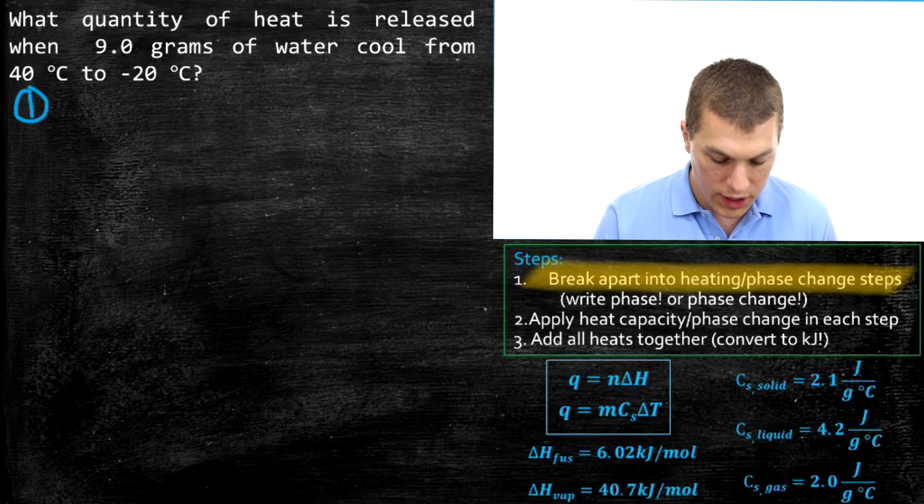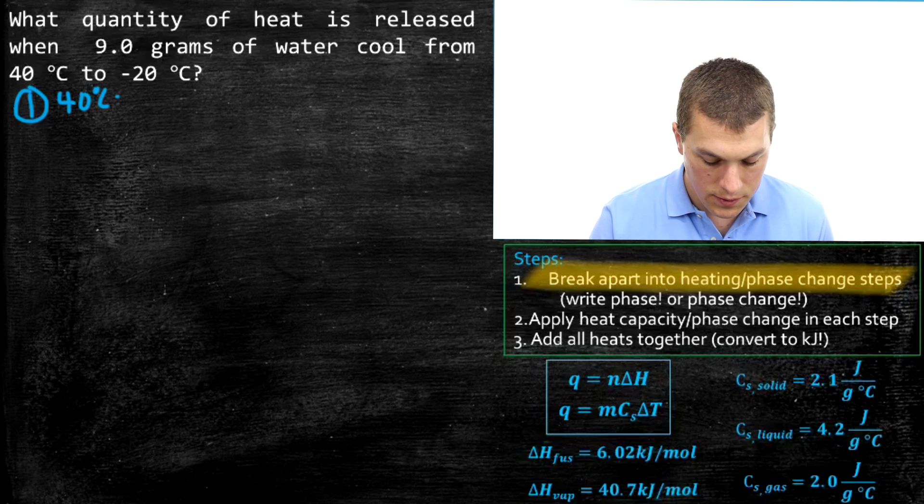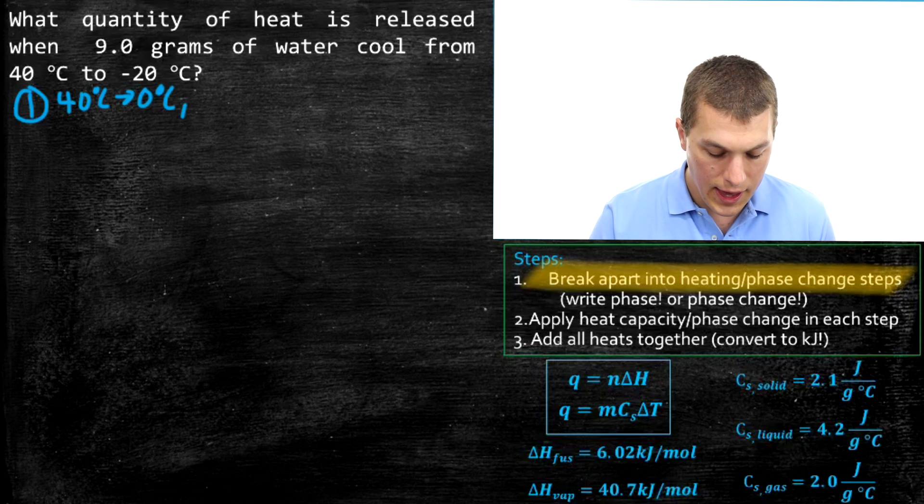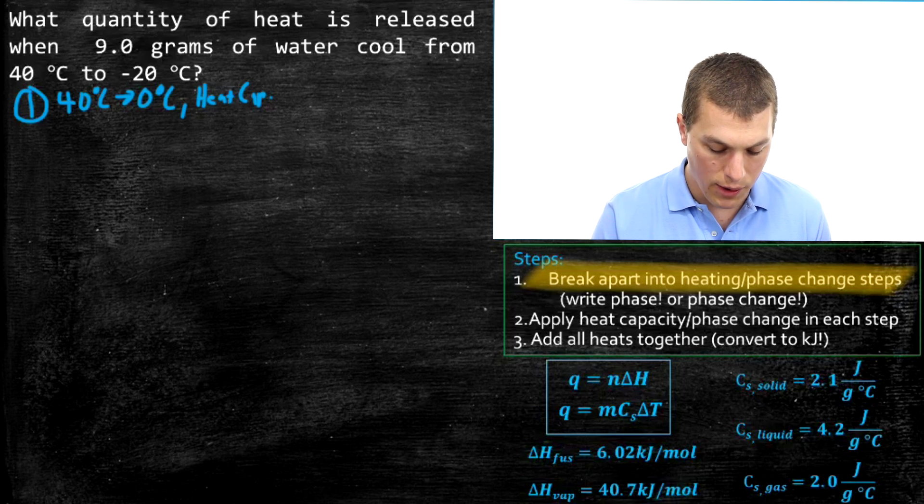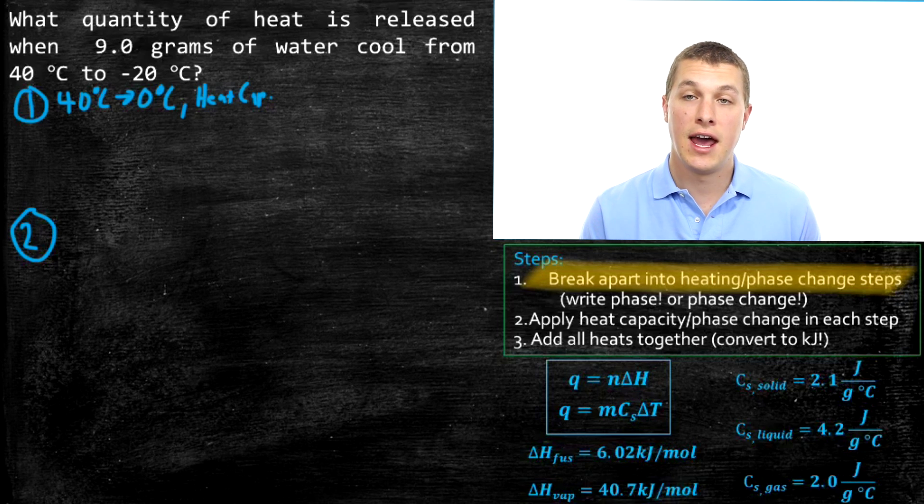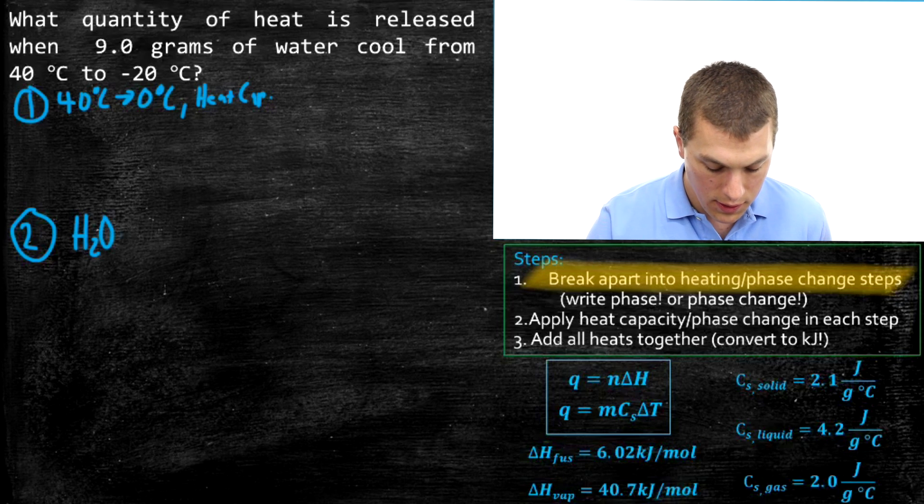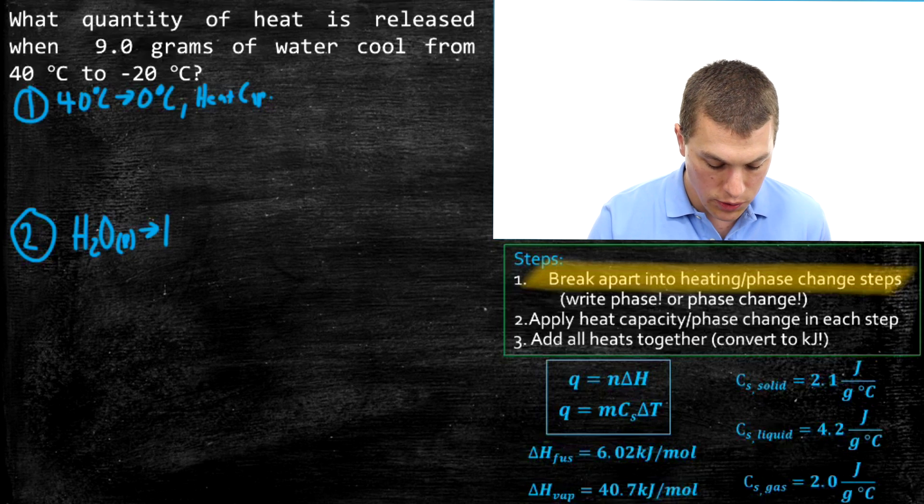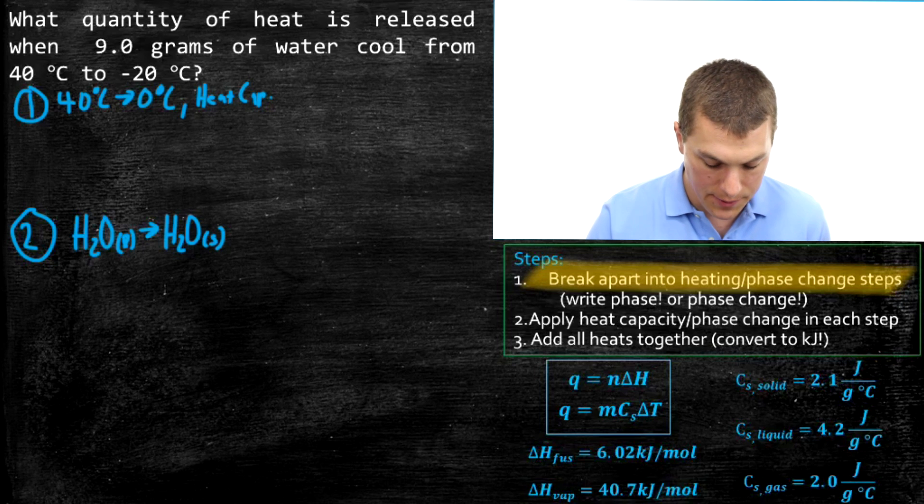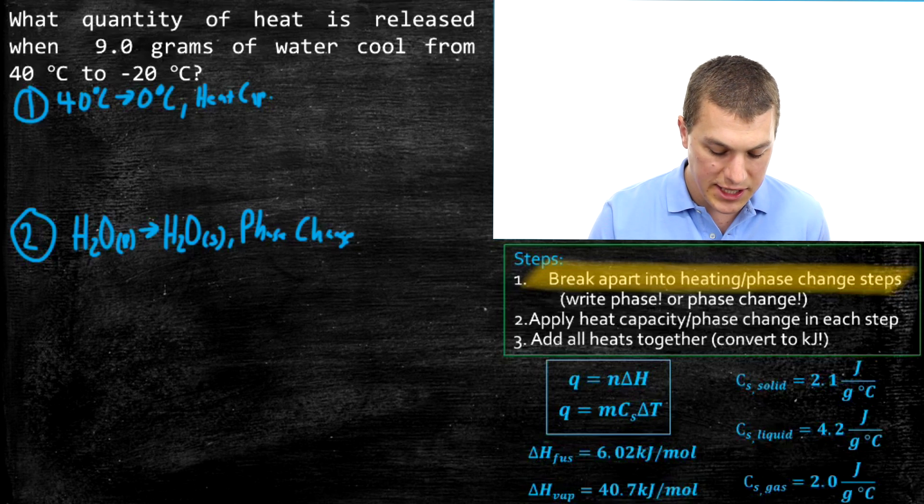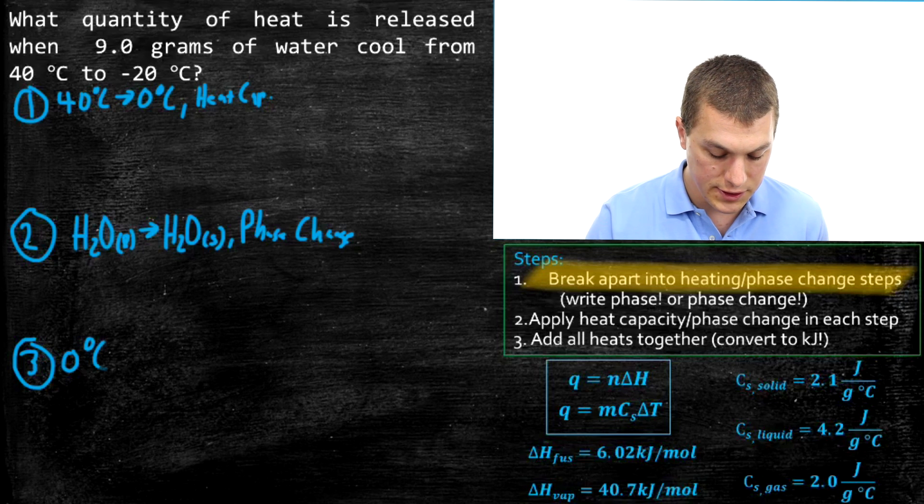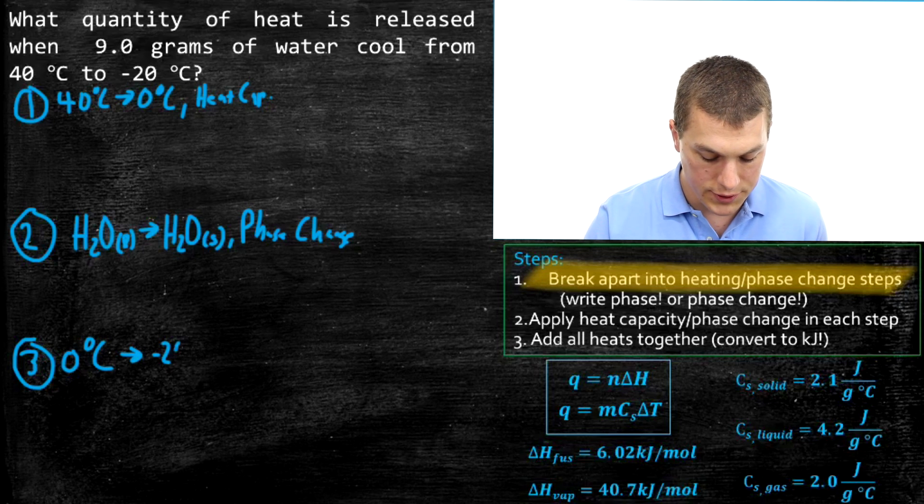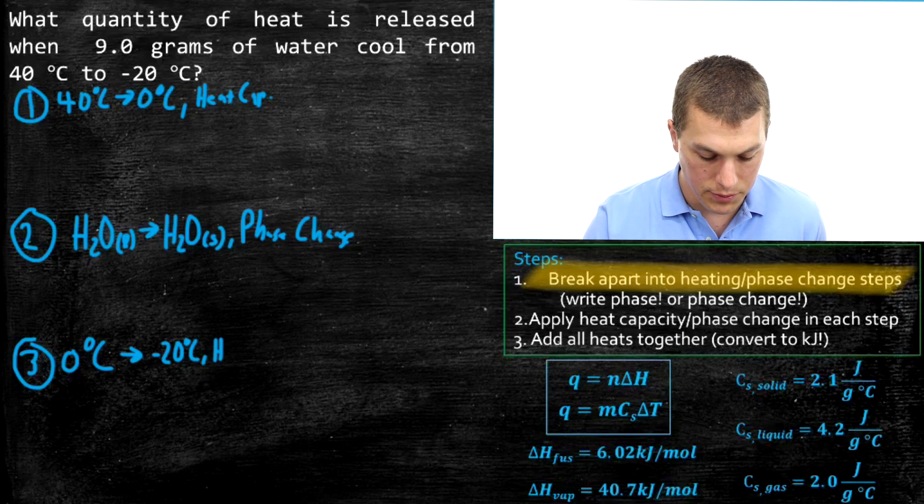The very first step is we're going to be going from 40 degrees Celsius to zero degrees Celsius. So that is a heat capacity problem. Now, step two is at zero degrees Celsius, we're going to be going from H2O liquid, because we were cooling from above zero, to H2O solid. That's a freezing step, that's a phase change. As we continue to cool, we're once again going to be dealing with a heat capacity problem. Because in this step, we're going to be going from zero degrees Celsius, the temperature of our ice, all the way down to minus 20 degrees Celsius.